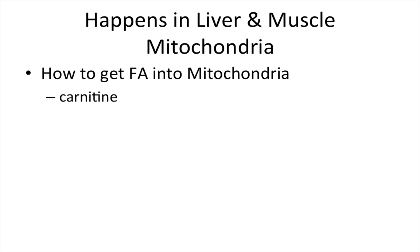It's really important to know where these metabolic activities are happening — these are very frequently tested topics, so you should know them really well. Beta oxidation happens in the liver and the muscle, specifically in the mitochondria. One thing you have to understand is how you get the fatty acid into the mitochondria, and that is through something called carnitine.